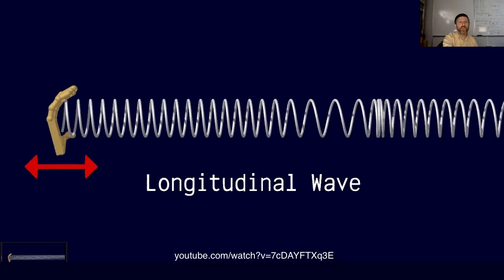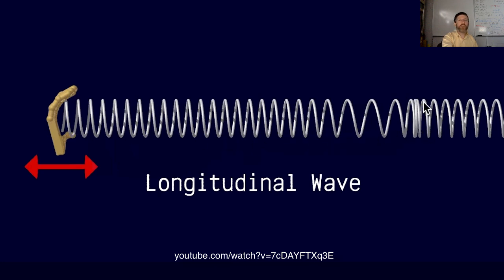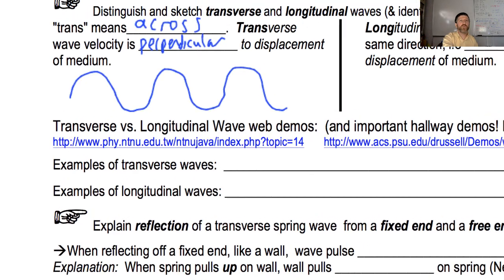There are two parts of this disturbance to notice. There's the part where it's really squeezed together, and right next to it, the part which is really pulled apart. Notice that some of the spring is at equilibrium under no net force, but you've got parts that are squeezed and parts that are pulled apart, and those have important names.